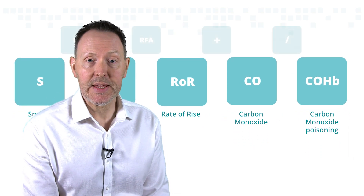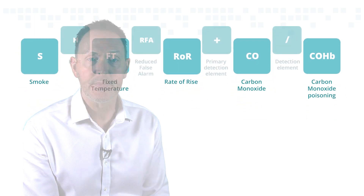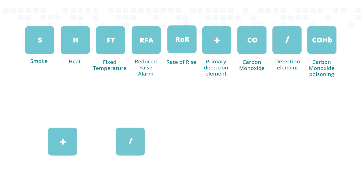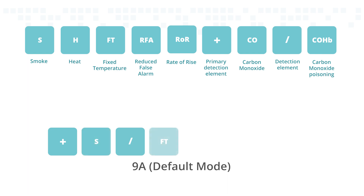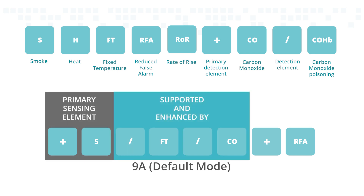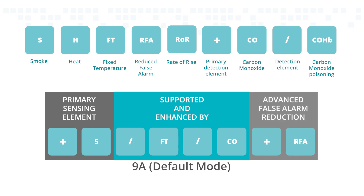As well as those letters representing the various sensing elements, there are a couple of symbols. The plus symbol denotes the primary detection element making the fire decision. The forward slash symbol denotes a detection element working to enhance the primary element. For example, in the default mode 9A, the mode string is +S/FT/CO+RFA, which shows the smoke chamber is the primary sensing element, supported and enhanced by both the heat sensor set at fixed temperature and the CO sensing element. The +RFA shows that the ACD's advanced false alarm reduction SMART algorithm is also in play. Importantly, a supporting sensing element cannot generate an alarm by itself — it's just there to confirm the fire decision reported by the primary element.